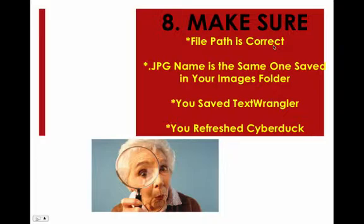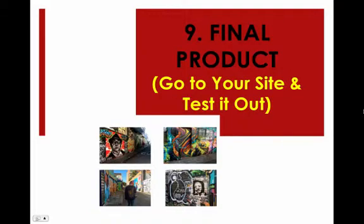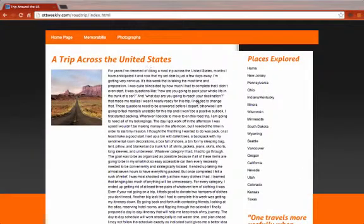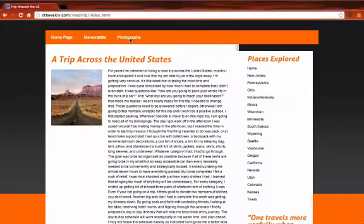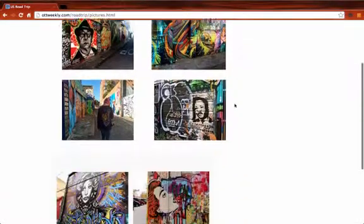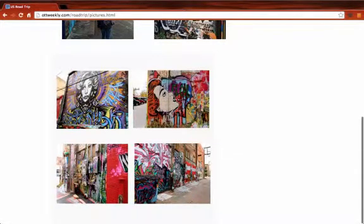Step eight, make sure your file path is correct — that your JPEG name is the same one saved in your images folder, that you saved it in TextWrangler, and that you refreshed CyberDuck. Last step, your final product: go to your site and test it out. When I go to my page and click on Photos, there it is. Now you try it yourself.